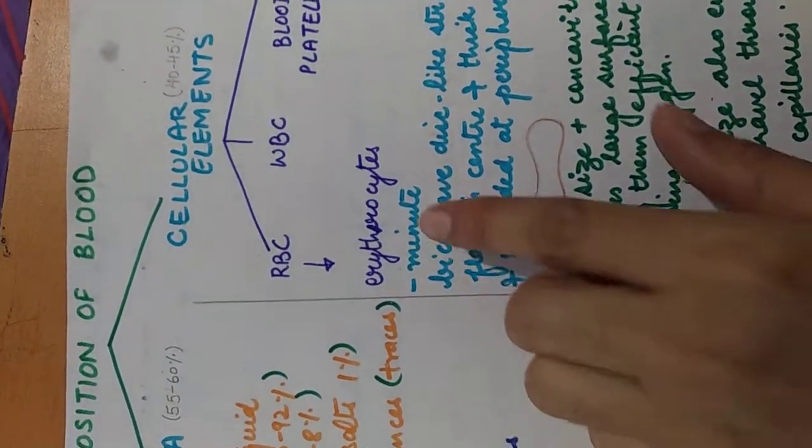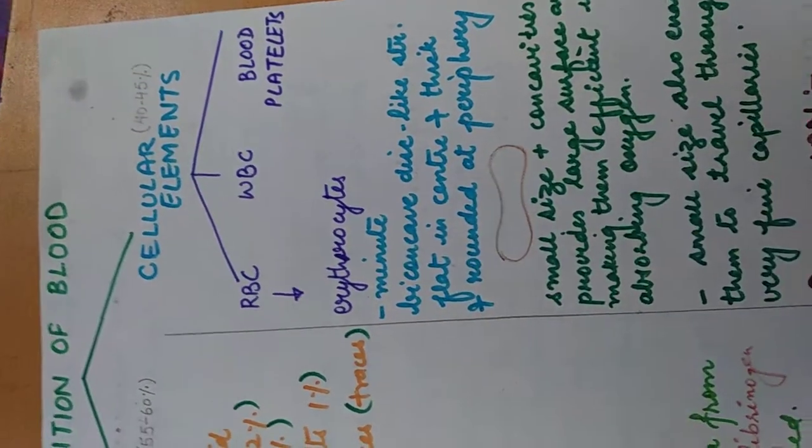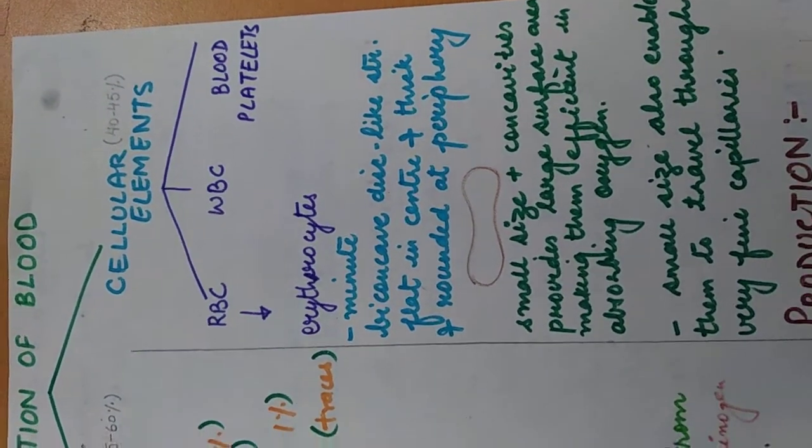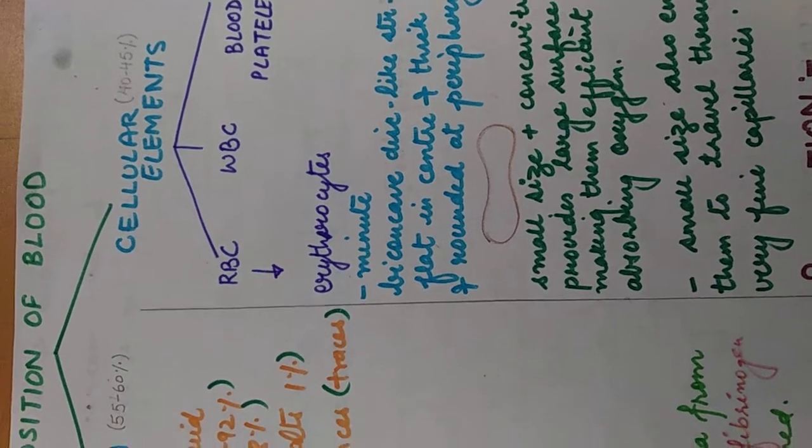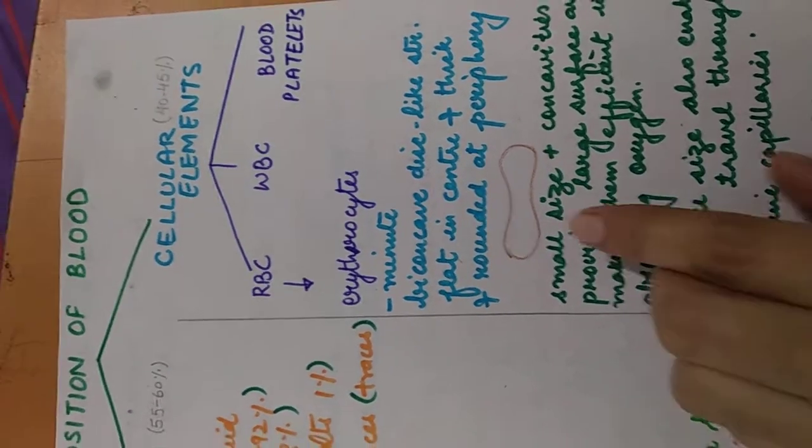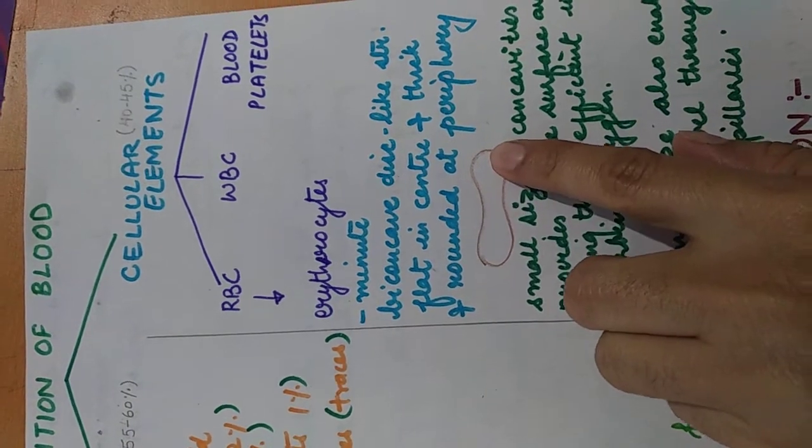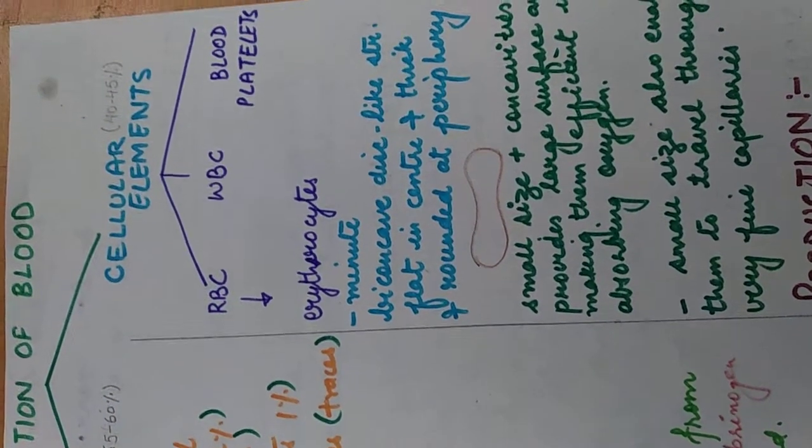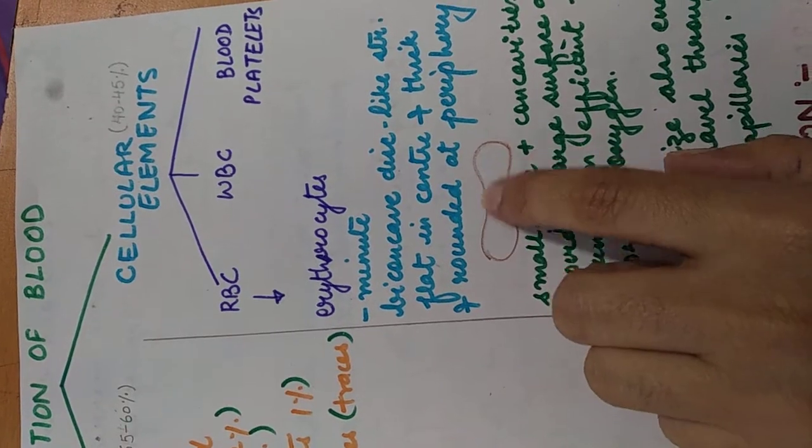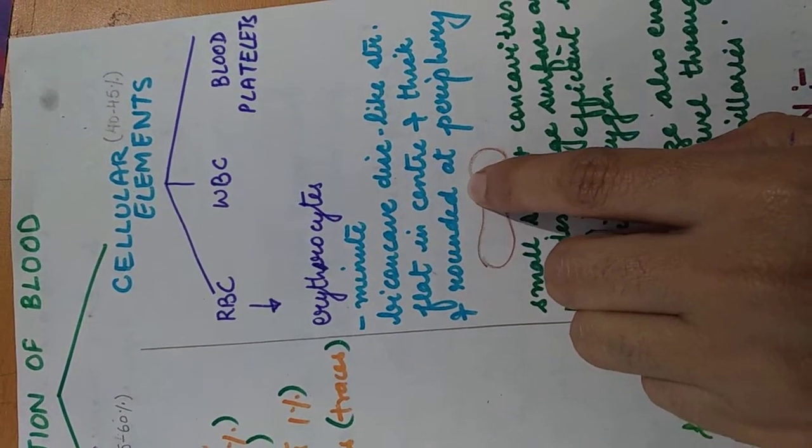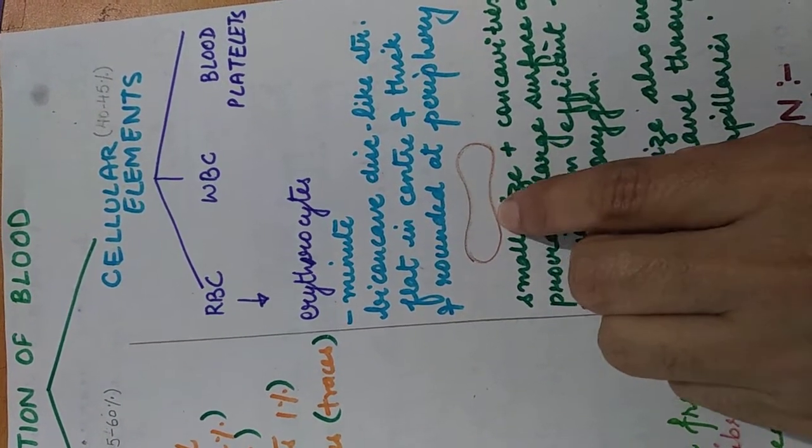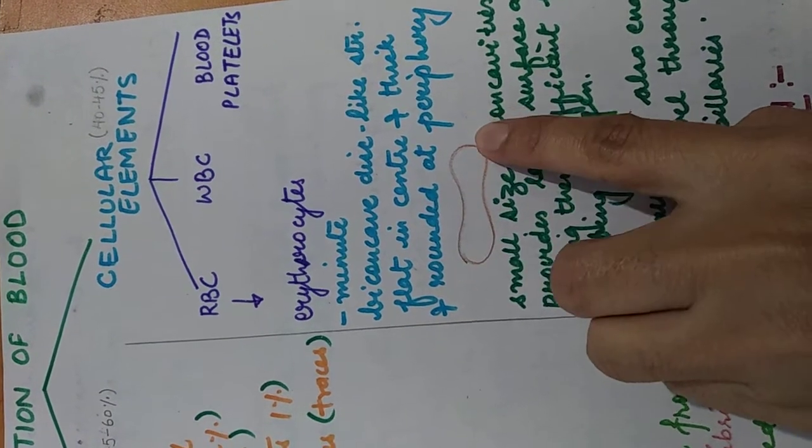RBCs, they are also known as erythrocytes. They are very small, minute in size. They are biconcave, disc-like structures that are flat in the center and thick and rounded at periphery. See, this is the structure.